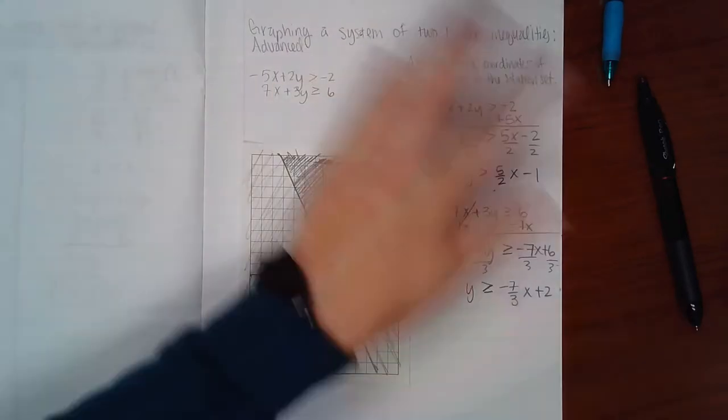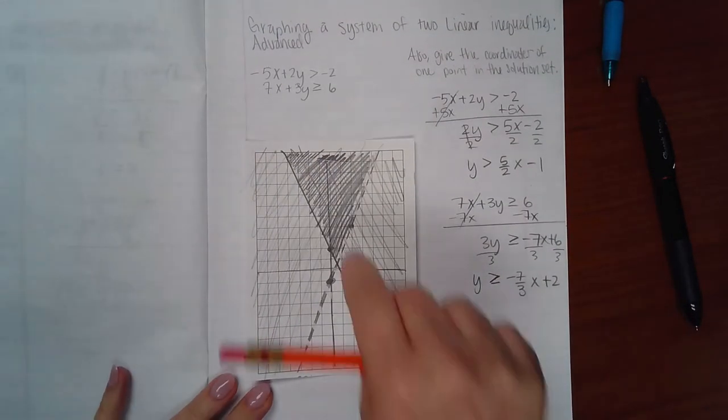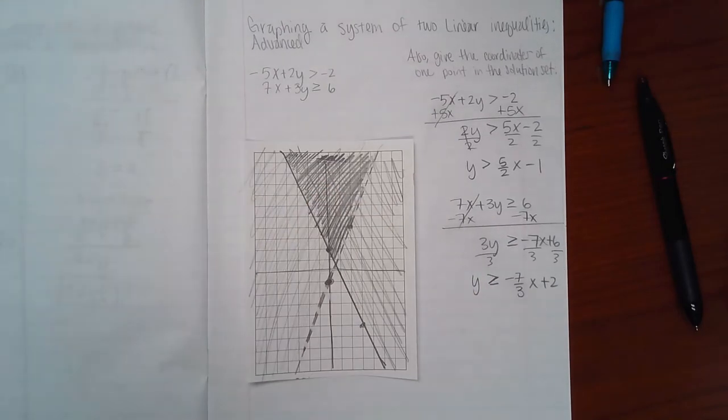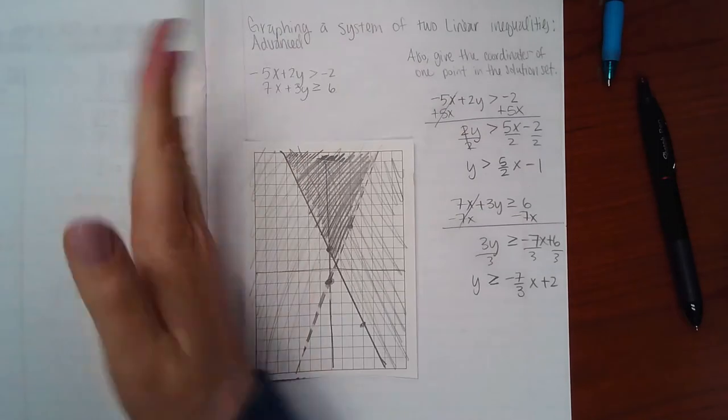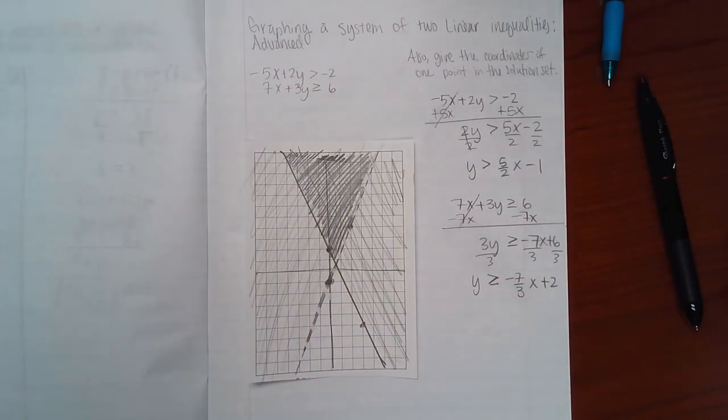The problem says give the coordinates of a point in the solution set. This region right here is the only thing in ALEKS that I'm going to shade—you are not going to shade all of this and all of that. You're only going to shade the one region where the two pieces overlap.